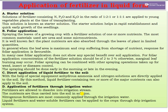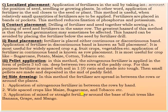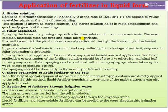The application of fertilizers in liquid form includes starter solution — a solution of fertilizer containing nitrogen, phosphorus, and potassium in the ratio of 1:2:1 or 1:1:1, applied to seedlings at the time of planting or transplanting. This is known as starter solution and helps in the rapid establishment and quick early growth of seedlings. The second method is foliar application, which involves spraying the leaves of growing crops with fertilizer solution of one or more nutrients. Common materials used include urea and some micronutrients. It is well known that plant nutrients are also absorbed through the leaves in limited quantities. When the leaf area is maximum and crops are suffering from a shortage of nutrients, foliar application response is favorable. In many cases, foliar application does not show special benefits over soil application.